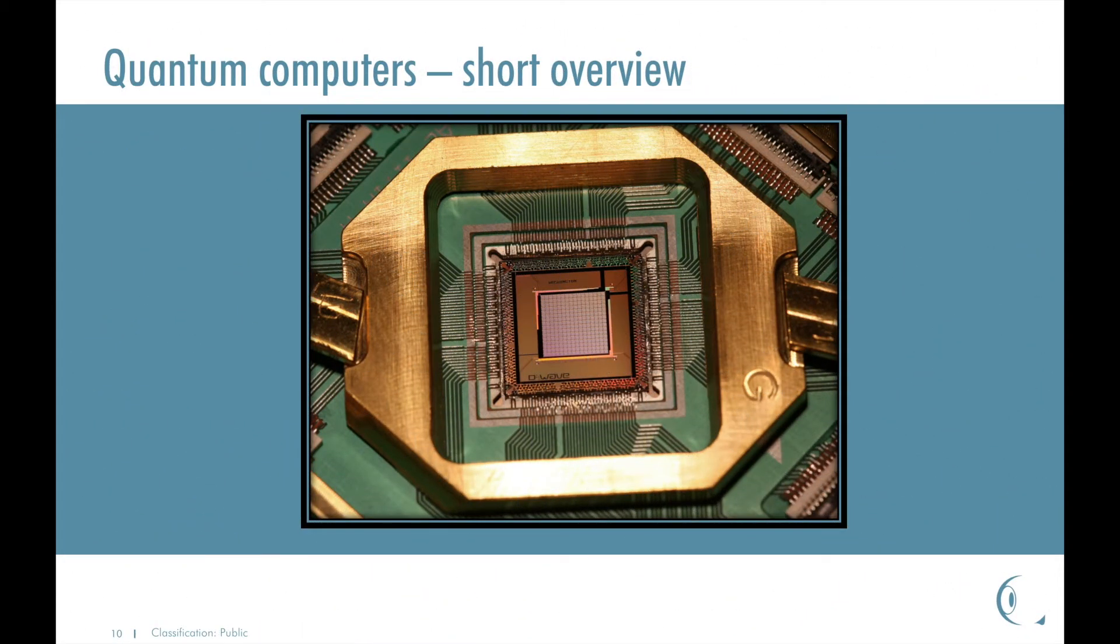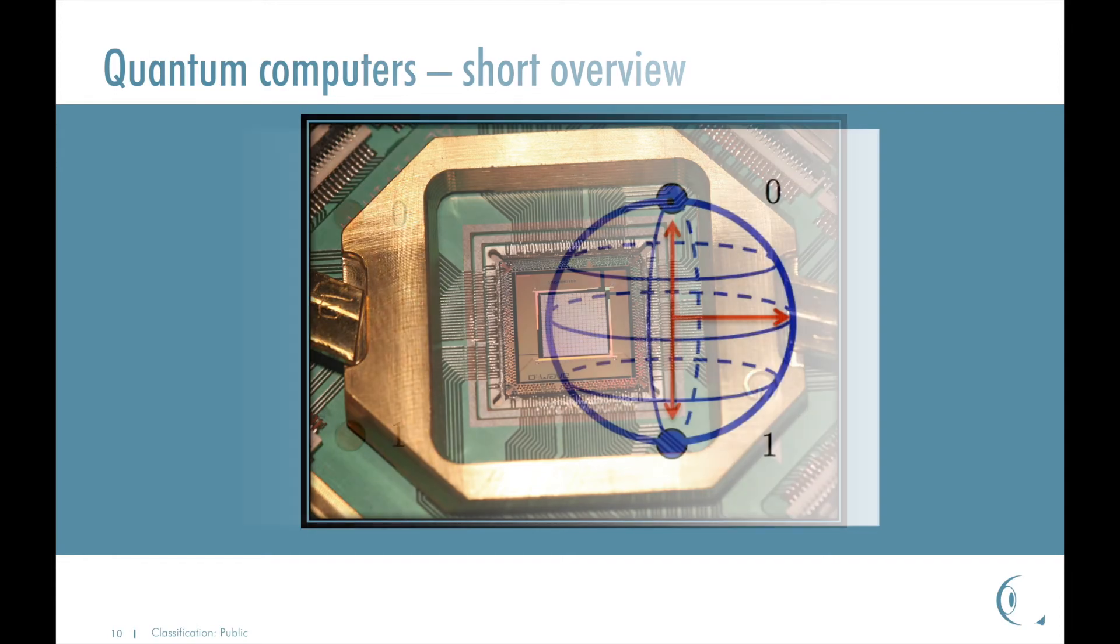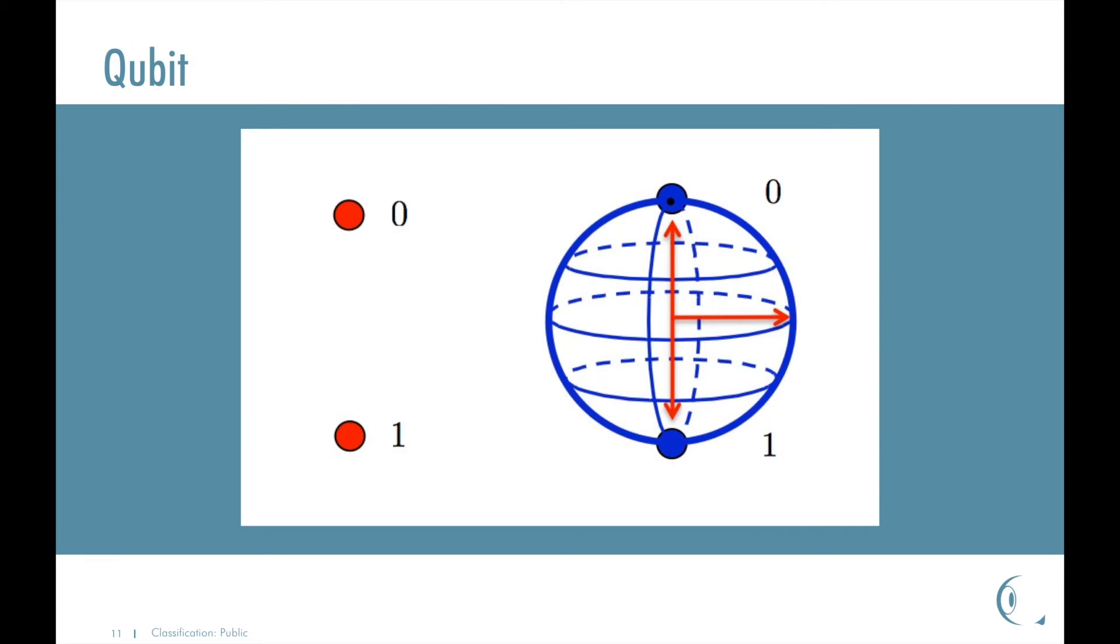Quantum computers are devices that process information using physical phenomenon unique to quantum mechanics, obeying the law of quantum mechanics. In classical computer, the basic unit of information is the bit, which is a two-state device that can represent the values 0 and 1.